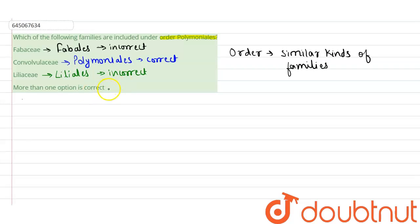And more than one option is correct - this is definitely an incorrect option. So the answer of the above question will be option two, Convolvulaceae. Now, order Polymoniales actually includes many families.